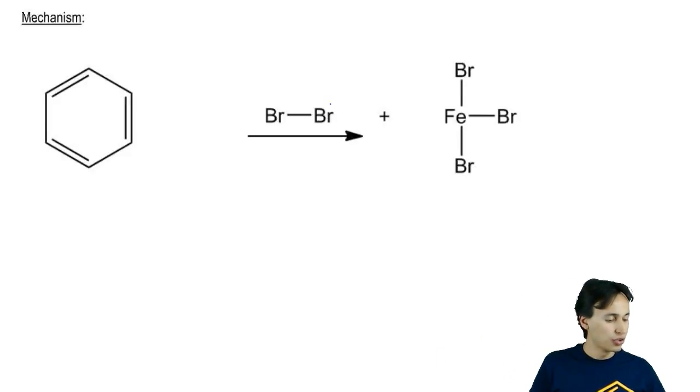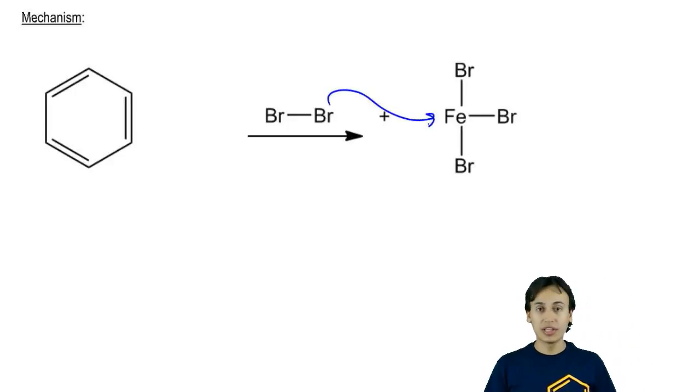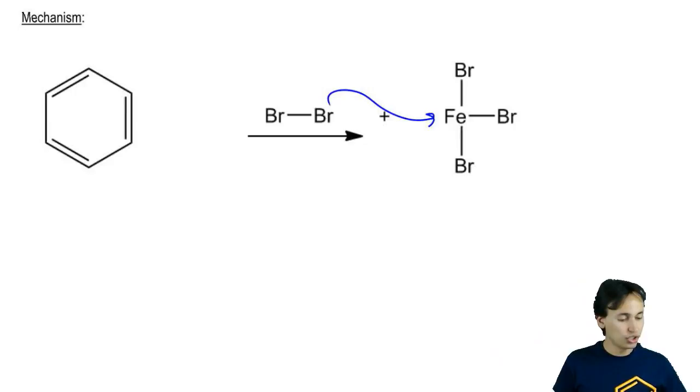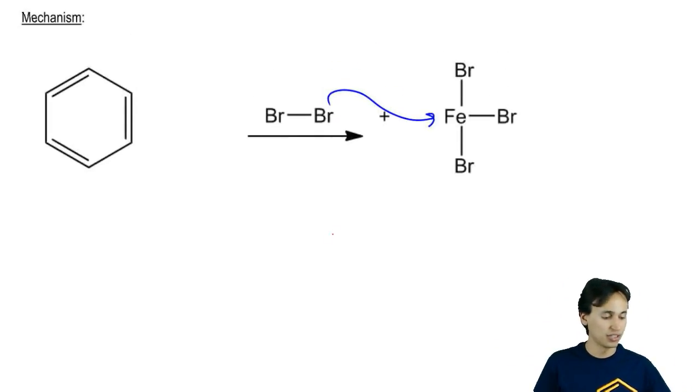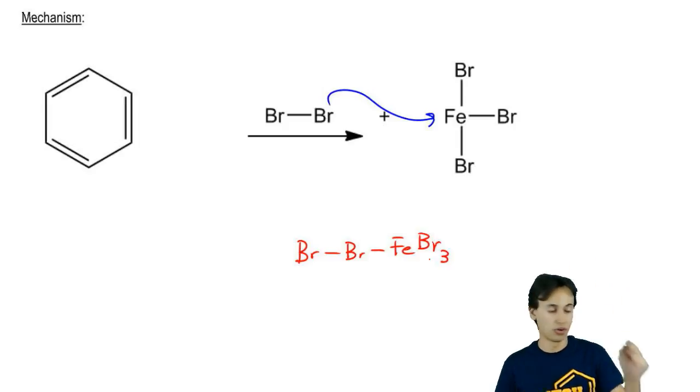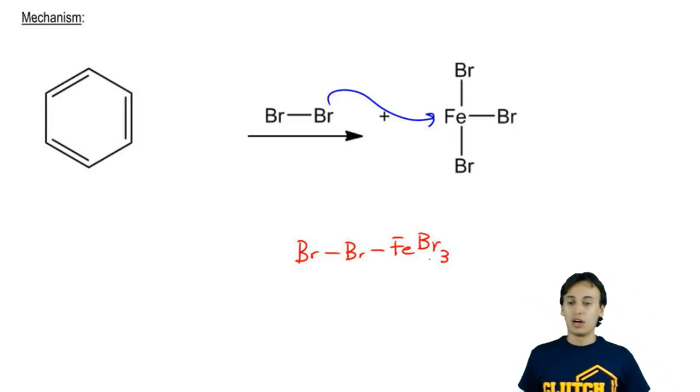That happens through the bromine sharing some of its electrons with the Lewis acid. It's missing electrons. It's a great electron pair acceptor. What this is going to do is it's going to form a complex that's very electrophilic. Let's see what it's going to look like. It's going to be a bromine attached to a bromine attached to an iron, which is attached to three bromines. I'm just going to put Br3. You guys know that stands for all three bromines.